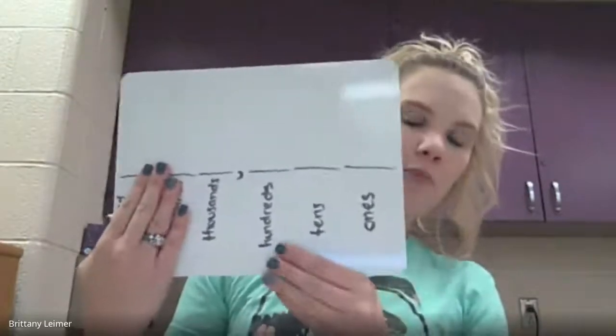Third grade is just a little bit different because we're adding two more places into what you already know. So we're just adding on a little bit of knowledge. Instead of just having it up to the thousands place like in second grade, we're adding two places. So we have the ones, tens, hundreds, thousands, ten-thousands, and hundred-thousands.